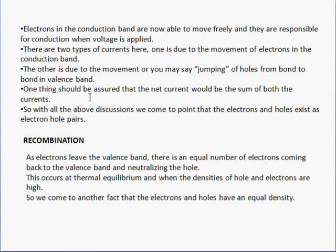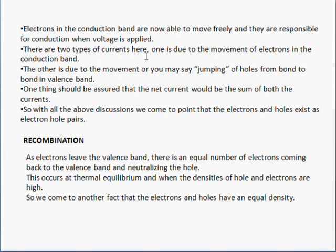Electrons in the conduction band are able to move freely and are responsible for conduction when a voltage is applied. Electrons in the conduction band are normally known as mobile carriers — they are free to move and carry electricity. There are two types of currents: one is the movement of electrons by mobile carriers in the conduction band, and the other is the jumping of holes from bond to bond within the valence band. The net total current is the sum of both currents — it is not subtracted, it is added.